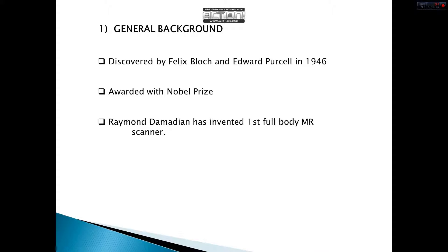General background. MRI was discovered by Felix Bloch and Edward Purcell in 1946. This is a vital discovery in this discipline because it proposed a very new method for imaging, and this discovery was awarded with a Nobel Prize. The first person who built an MRI scanner was Raymond Damadian. He used the first full-body MRI scanner. Since this invention, many hospitals have obtained MRI scanners for imaging and it has become a worldwide technology to detect disease and distortions.